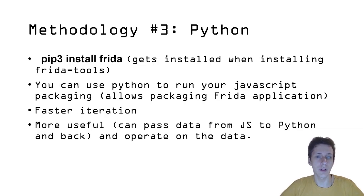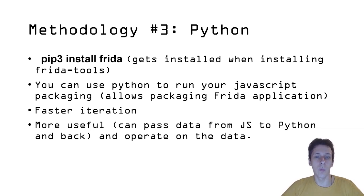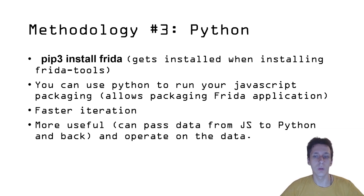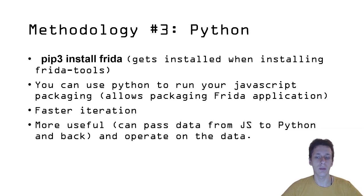Methodology three is basically a Python program. For that, you only need to run pip install frida — though if you already installed frida-tools earlier, it is already installed. This is the most powerful but most difficult method of using Frida. You can use it to run your JavaScript payloads directly in Python, which allows for much faster iteration of debugging. It is much more useful because you can pass data from JavaScript to Python and back, and directly operate on the data within your Python script.